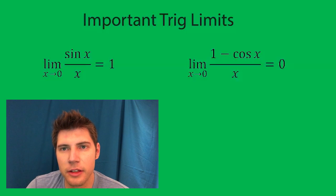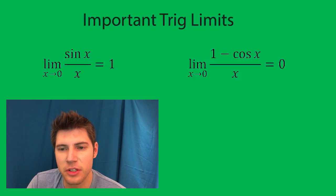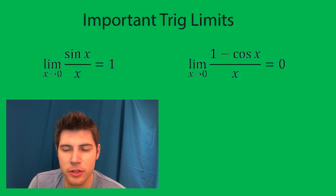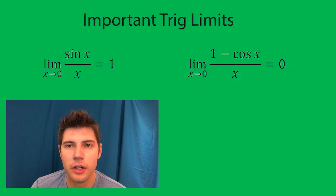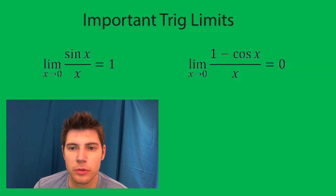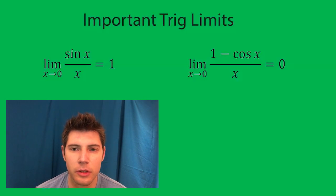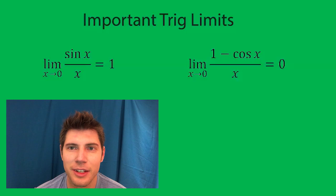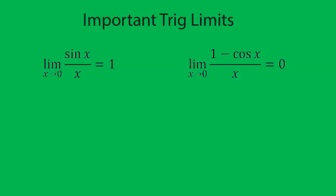And the limit as x approaches 0 of 1 minus cosine x over x equals 0. So as long as you know these two when they show up, you'll be able to utilize them. That's about it and I'll talk to you guys soon. Bye.